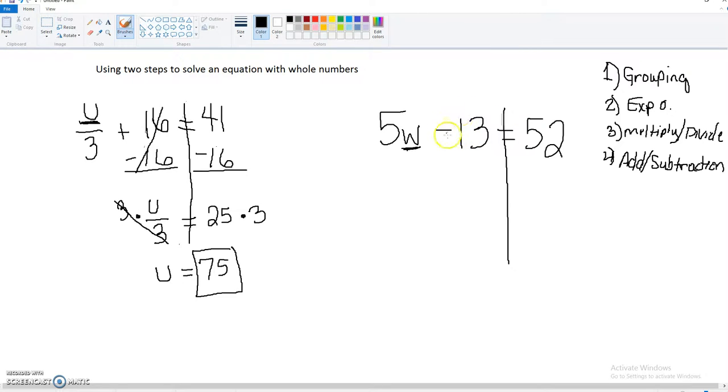So since this is negative 13, that means we're going to add 13 to both sides. So these cancel. So this gets a 65 equals, and we're bringing down our 5w.